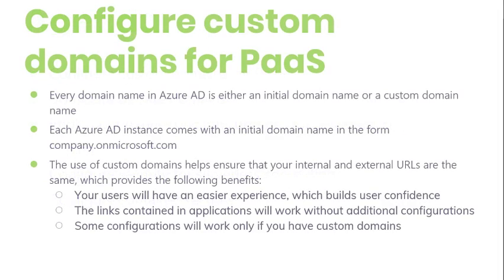Every domain name in Azure AD, either an initial domain name or a custom domain name. Azure AD comes with an initial name in the form company.onmicrosoft.com. The third level domain name, for example, contoso.onmicrosoft.com, is set when the directory is created, typically by the admin who creates the directory. The use of a custom domain helps ensure that your internal and external URLs are the same.